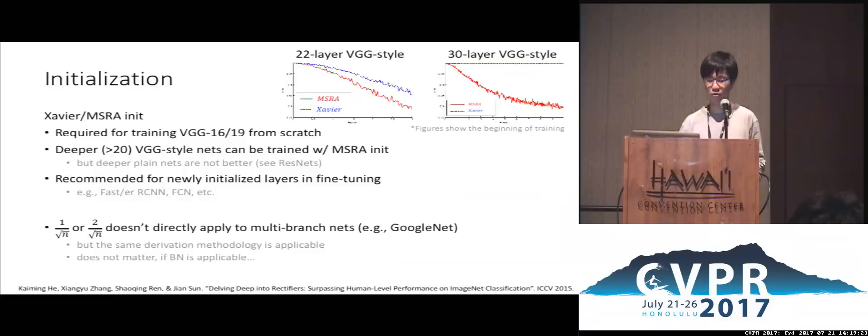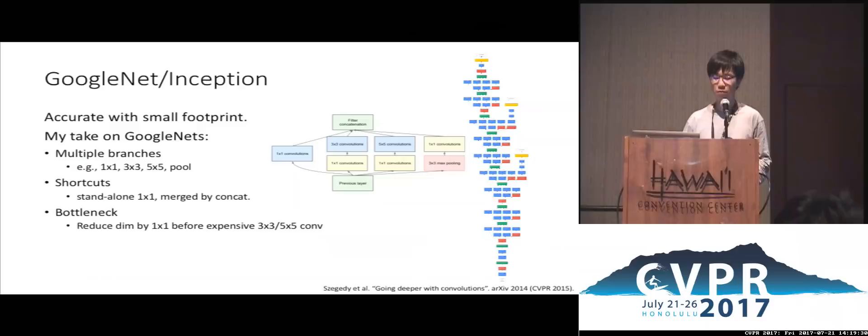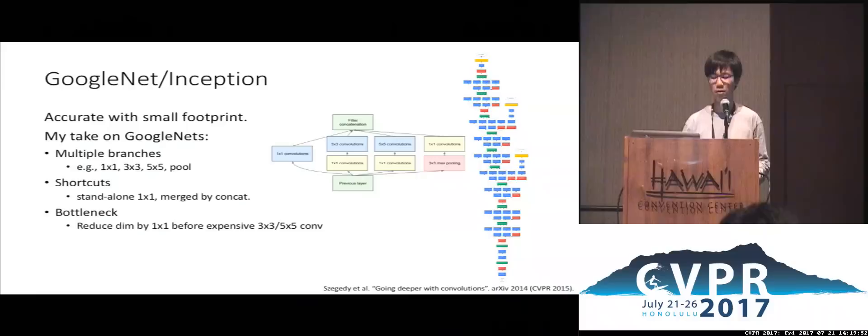In 2014, another very successful neural network was designed: GoogleNet, called Inception. GoogleNet is known for its very good accuracy and at the same time small footprint. There are many complicated designs in GoogleNet, which I would like to summarize into three main points.